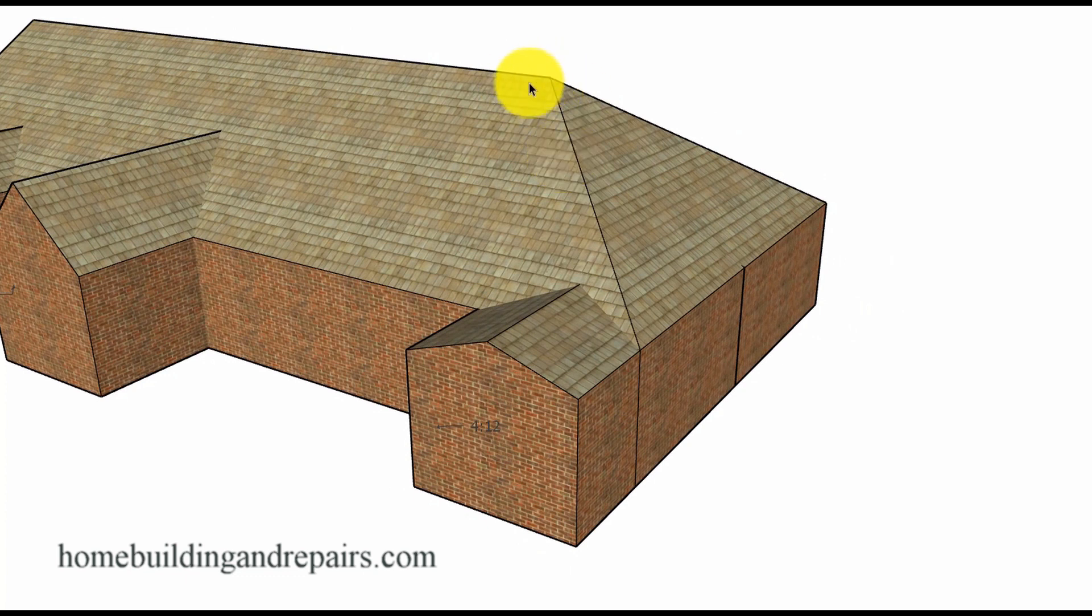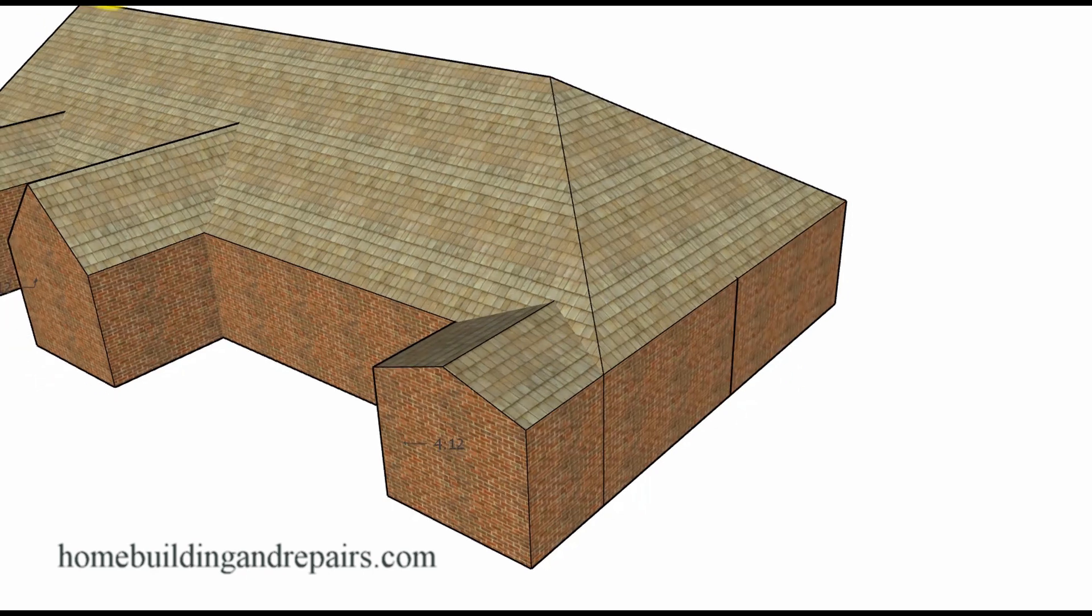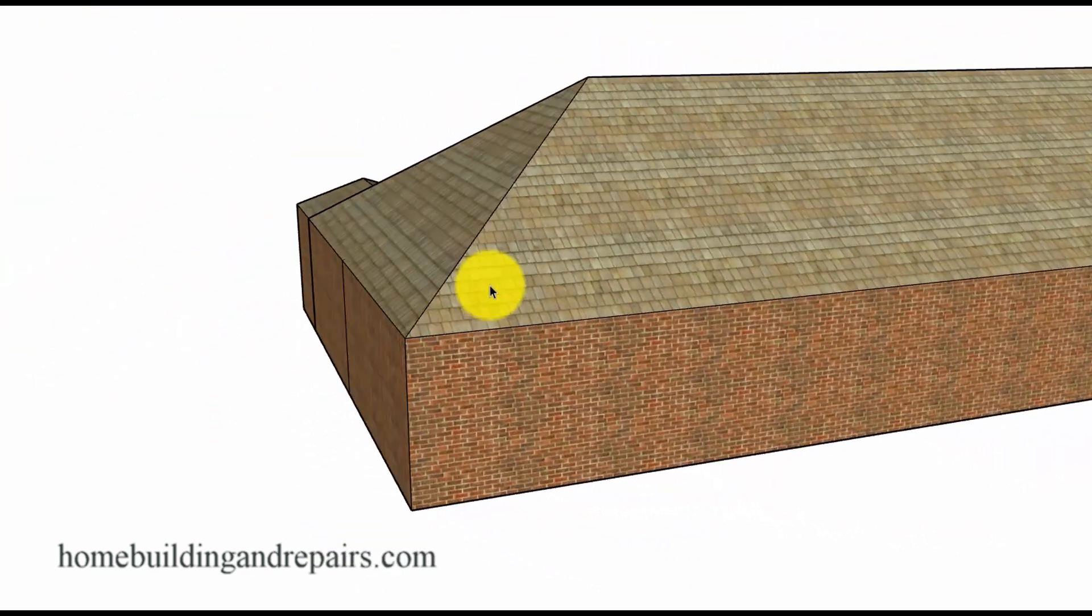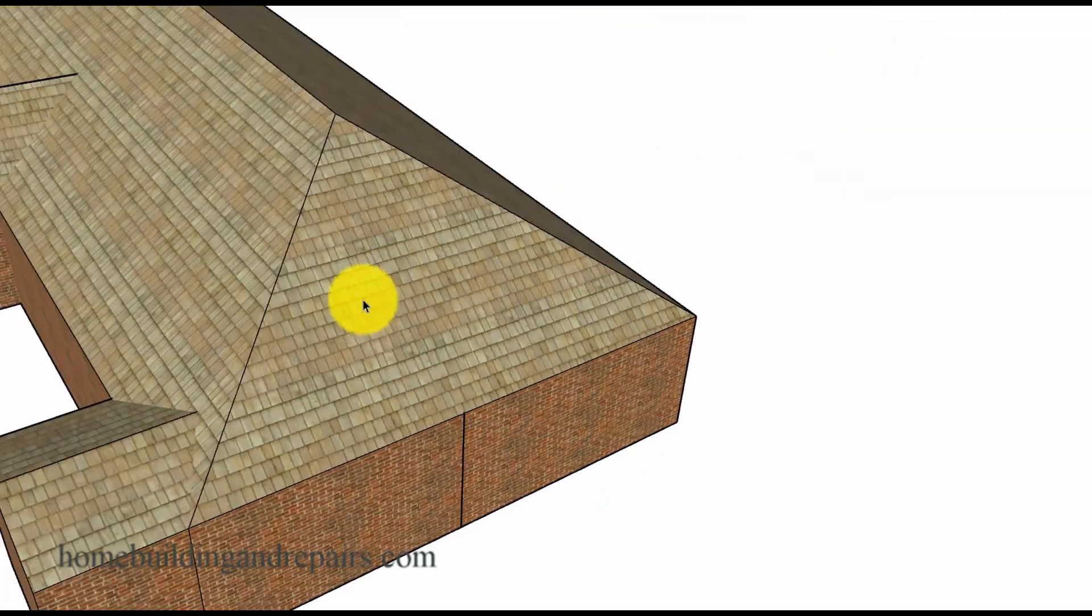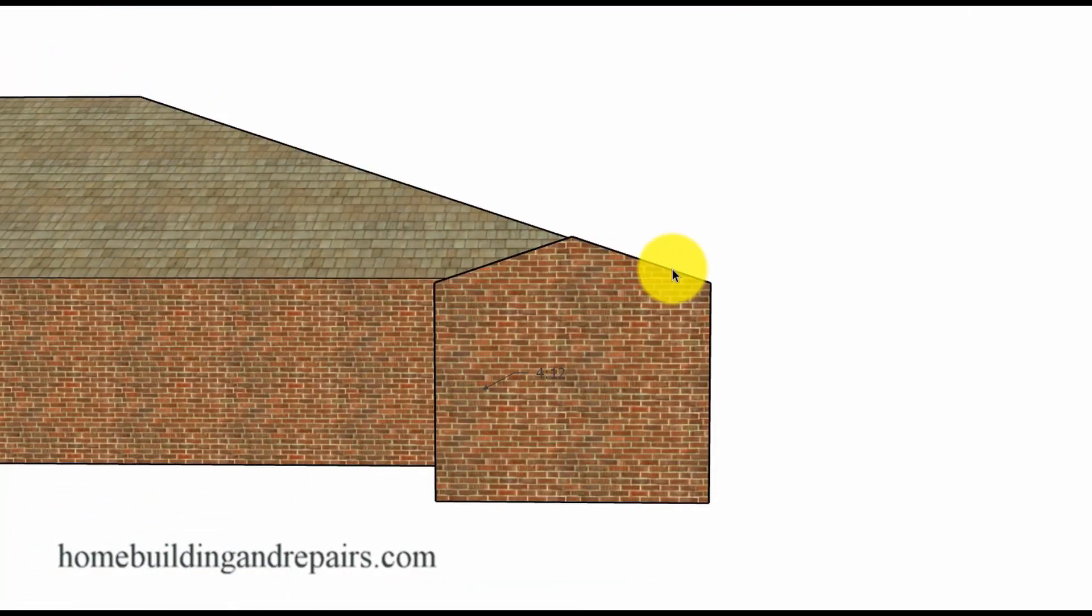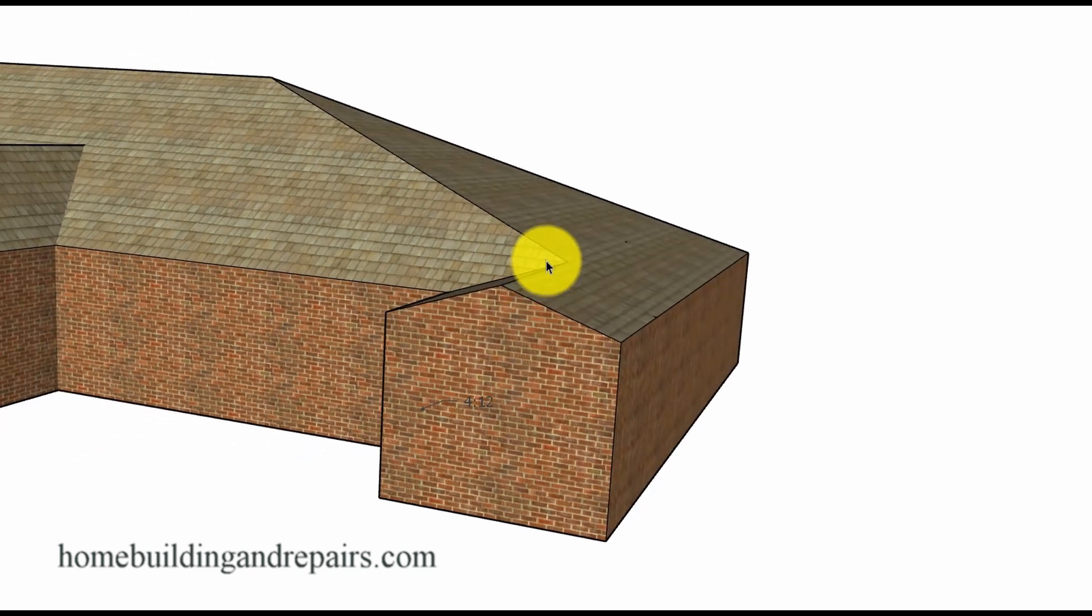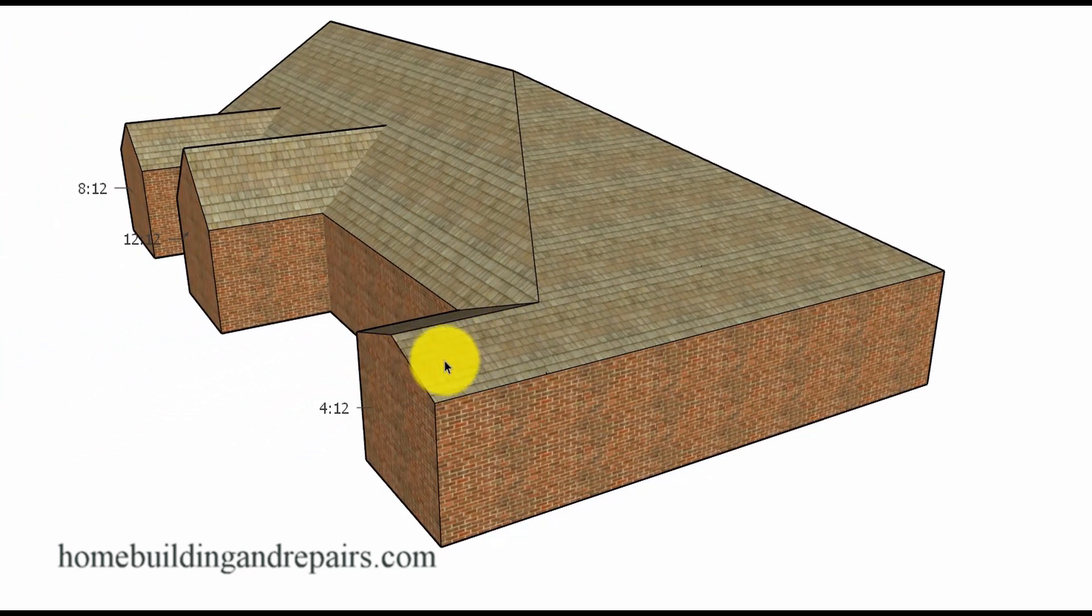And in that example we would have an 8 and 12 roof pitch on this side and on the other side over here. However, this side of the roof would need to match the 4 and 12 that we would be using on this side here.